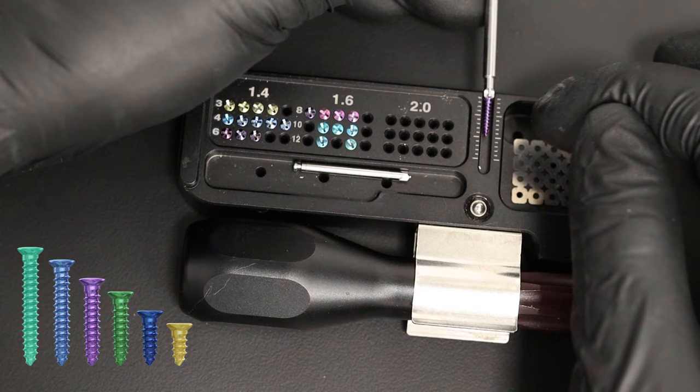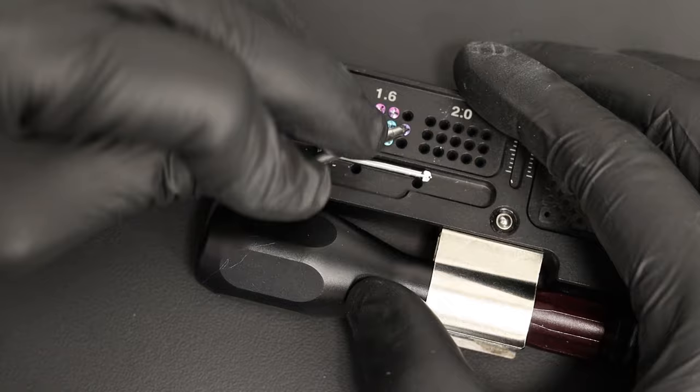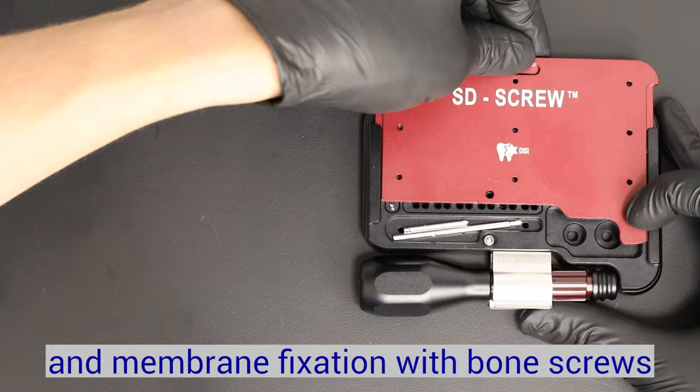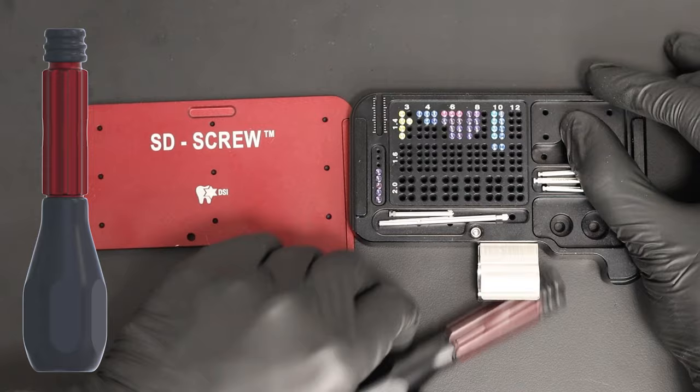The head of the drivers is a Phillips connection which engages bone screws using friction. The screwdriver handle is used in conjunction with the hand screwdriver shaft to fixate titanium screws. The shaft of the driver slides into the handle and clicks into place.